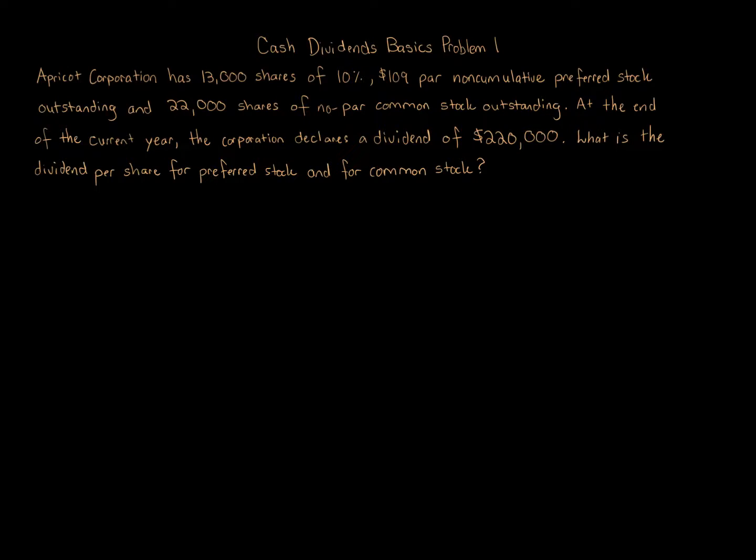Cash Dividends Basics Problem 1. Apricot Corporation has 13,000 shares of 10% $109 par non-cumulative preferred stock outstanding and 22,000 shares of no par common stock outstanding. At the end of the current year, the corporation declares a dividend of $220,000. What is the dividend per share for preferred stock and for common stock?